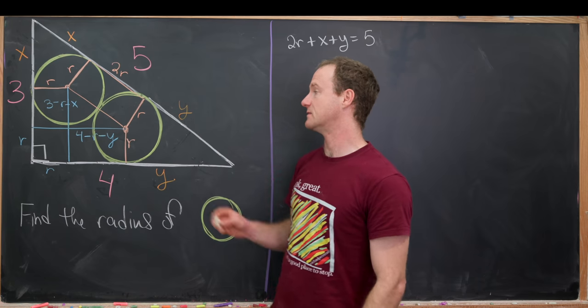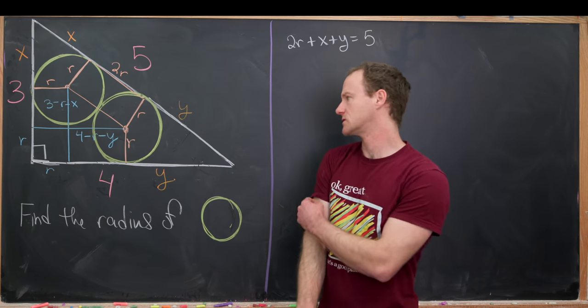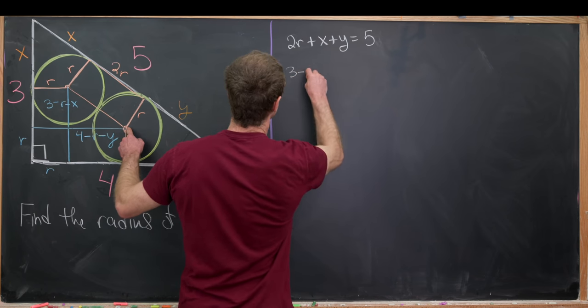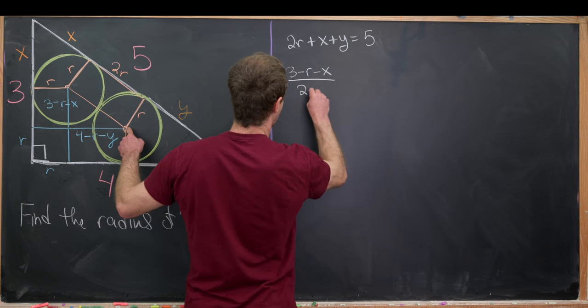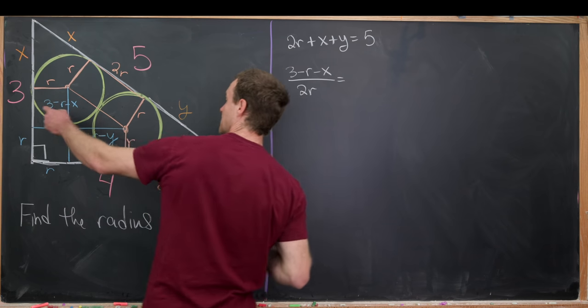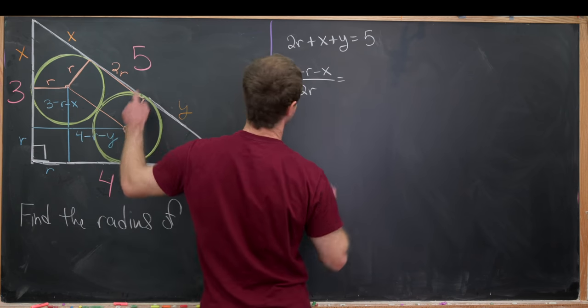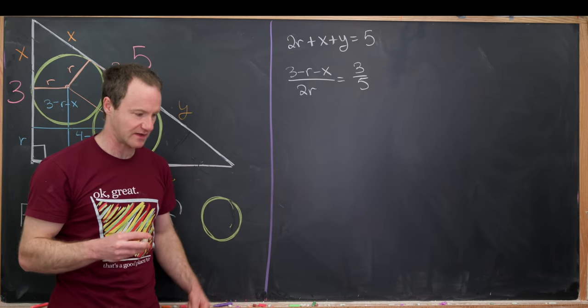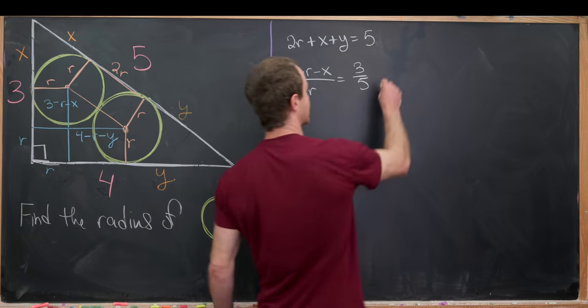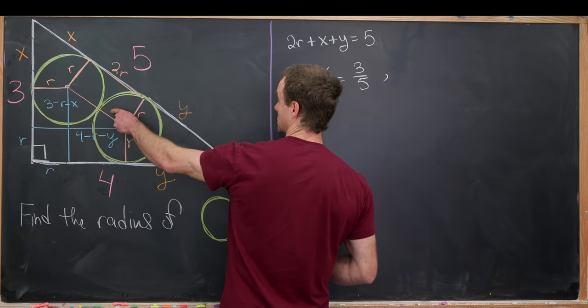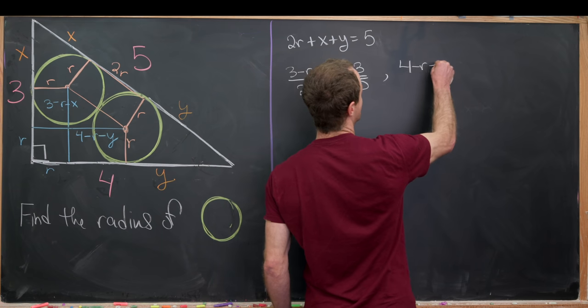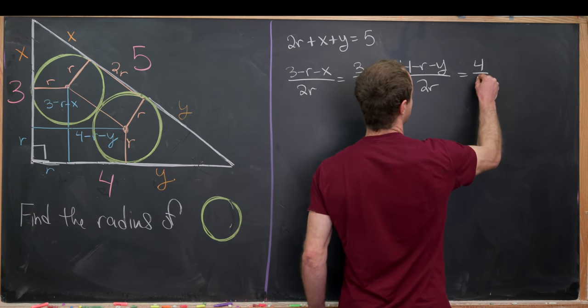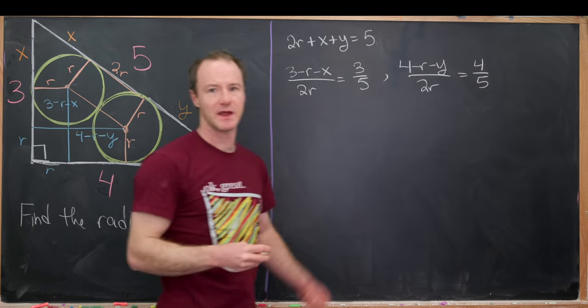And now we can apply the similarity of these two triangles. So let's do that with this side length right here and this hypotenuse. So that gives us 3 minus r minus x over the hypotenuse 2r is equal to this length over 5, so 3 over 5. That's just by the equal proportionality of similar triangles and their side lengths. Then applying similarity to this base along with this hypotenuse will give us 4 minus r minus y over 2r again. But now it's equal to 4 over 5 just because of the comparison that we're making.